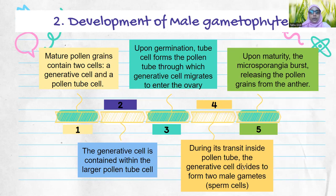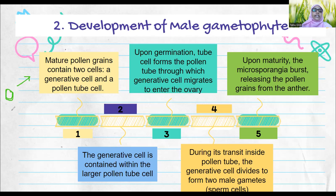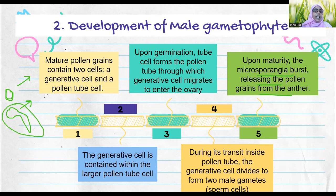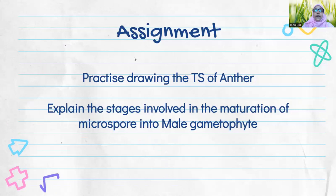The generative cell divides and two male gametes — also called sperm cells — are formed. The contents in the tube will open up and go into the ovary for fertilization. Sometimes the tube structure is formed in the anther itself; in other cases the tube structure forms only when the pollen grains stick to the stigma. Depending on the plant species, the developmental stages will differ — in some plants pollen grains are released as circles, in others the pollen tube develops first before release.